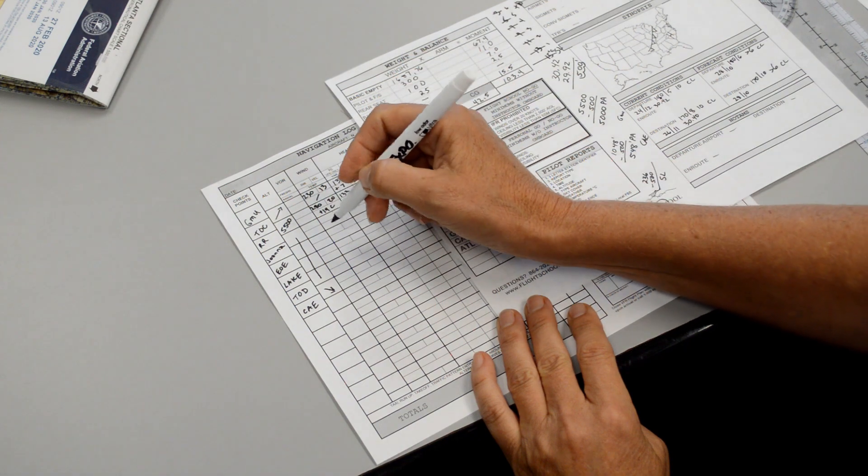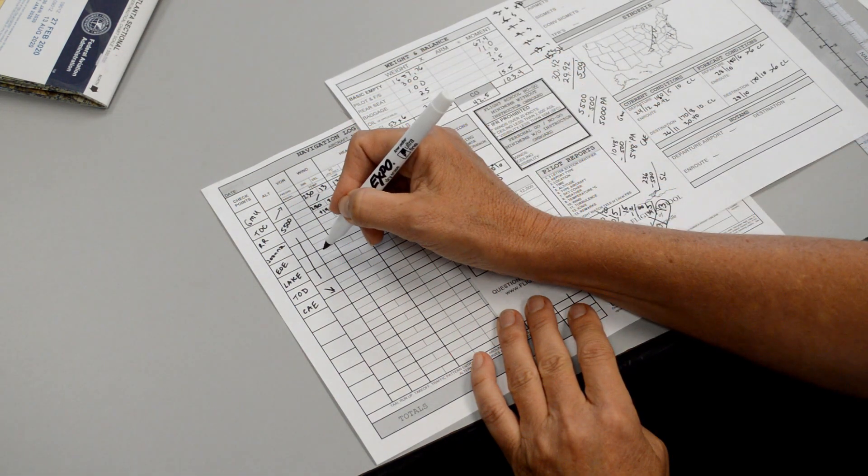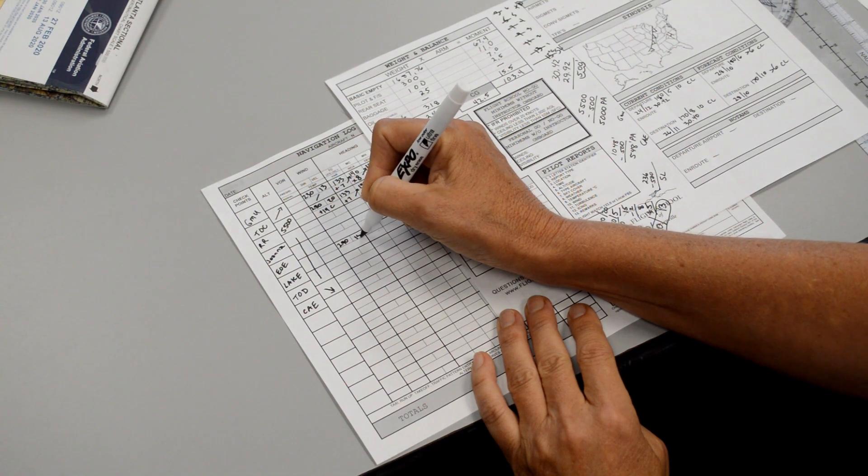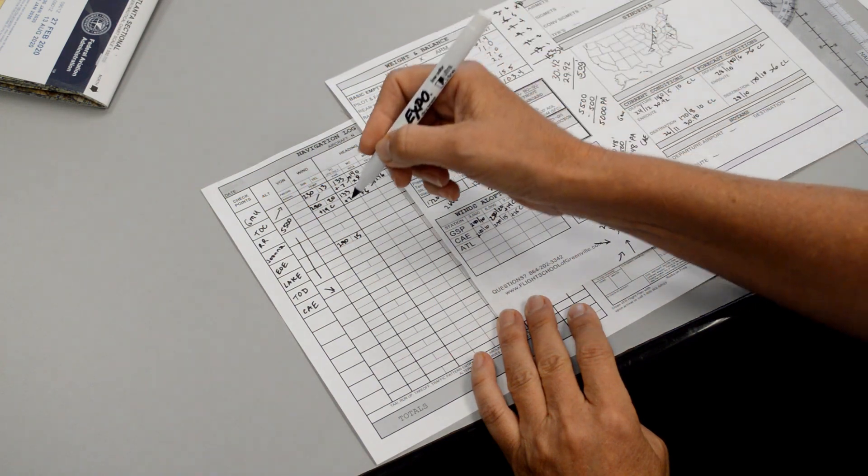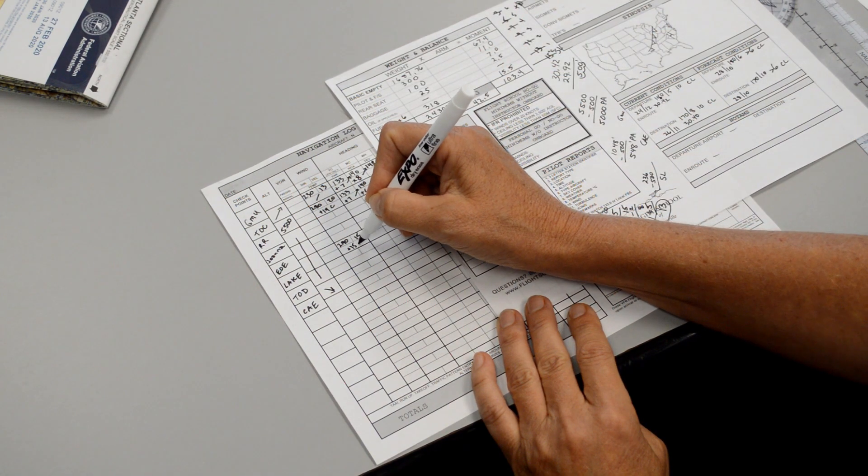And we'll update the winds here, and we're going to make those 290 at 15. So the winds 290 at 15, and the temperature is basically about the same. We have plus 15 Celsius.